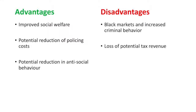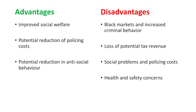You may still have social problems and actually face rising police costs as the black market is hard to control. If people are buying products on the black market, there are no more quality assurances that come from the government on such products. Some argue that the legalization of marijuana in the US has led to improved quality of the drug available in some states. In countries where alcohol is prohibited, some homemade versions have potentially dangerous side effects. Finally, a prohibition infringes on consumer sovereignty — the consumer loses the right to choose what to consume, and instead this decision is made by the government.